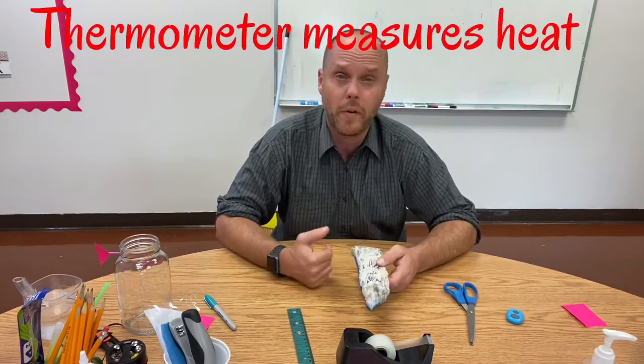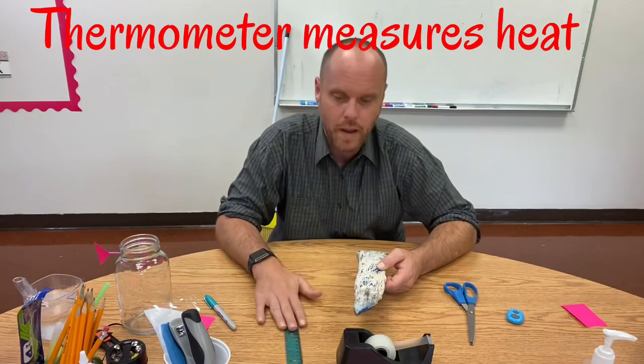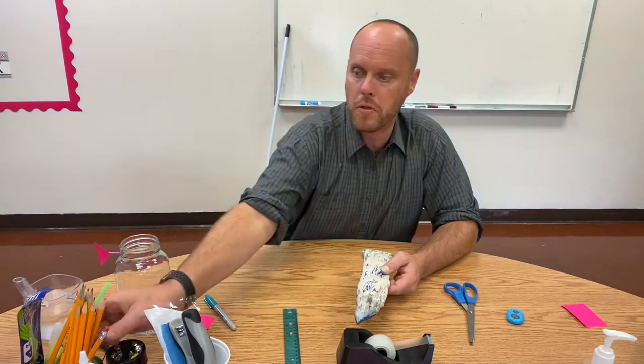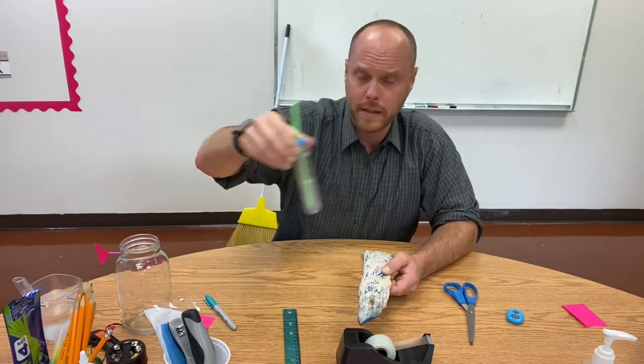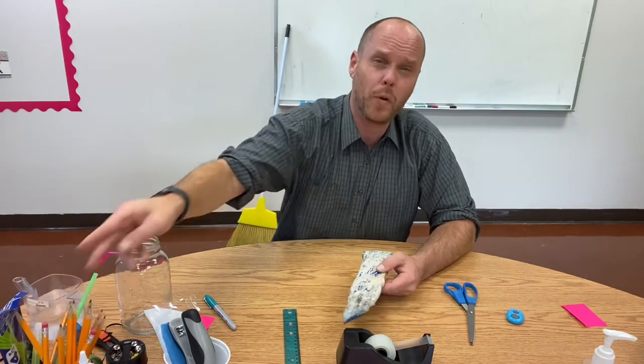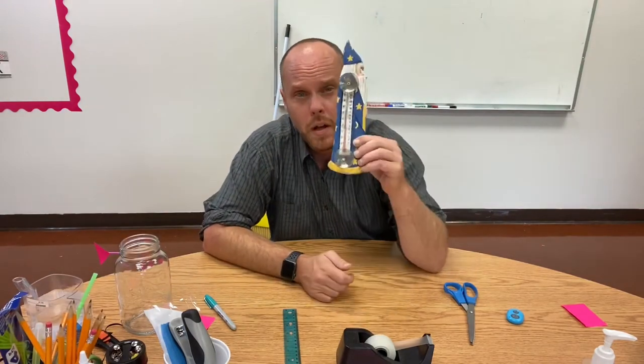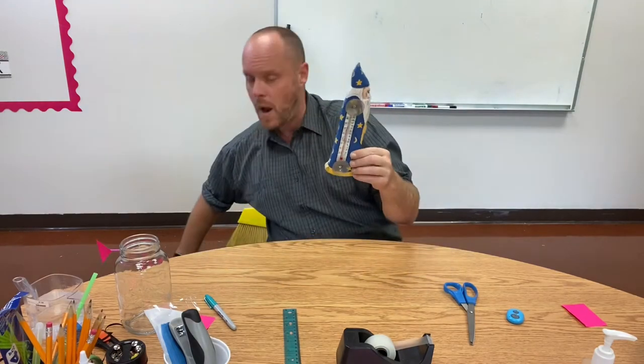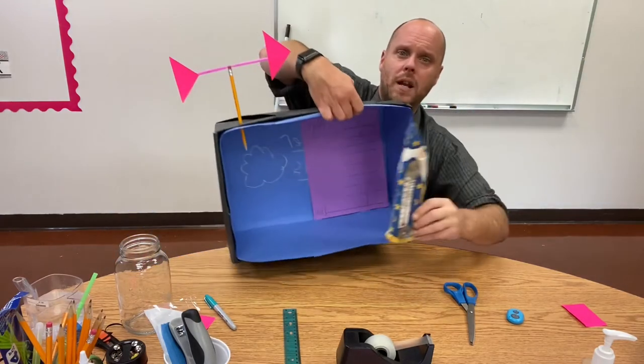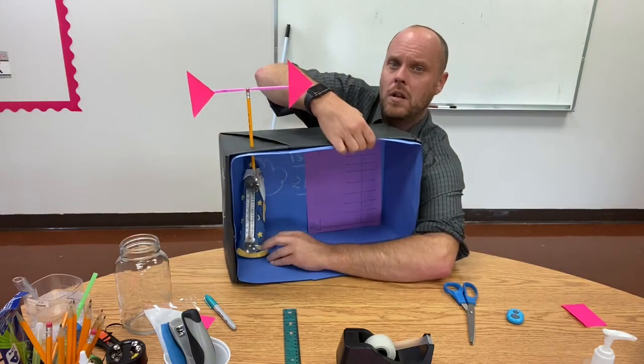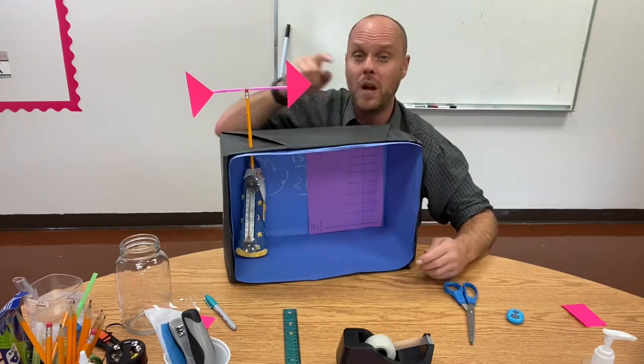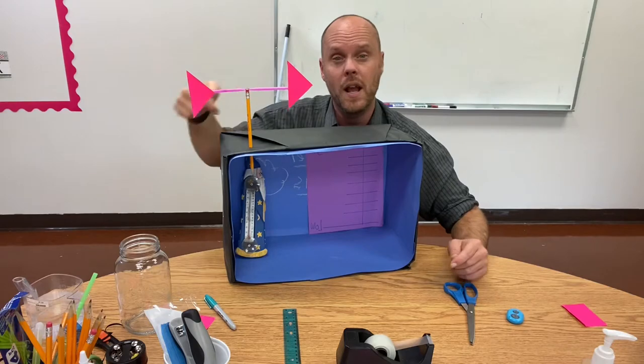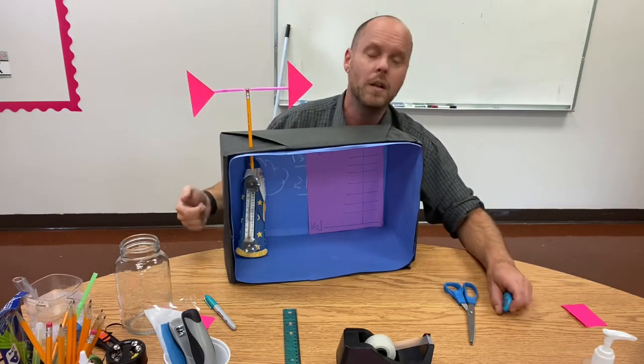As far as the next step, we have thermometers. I have built some thermometers, but it's a little hard to do right now. So if you have a thermometer around the house, feel free to put it in your weather station. I just happen to have Mr. Wizard right here, and we're going to go ahead and put that in our weather station. So we now can tell the direction of the wind from our weather vane, as well as the temperature.